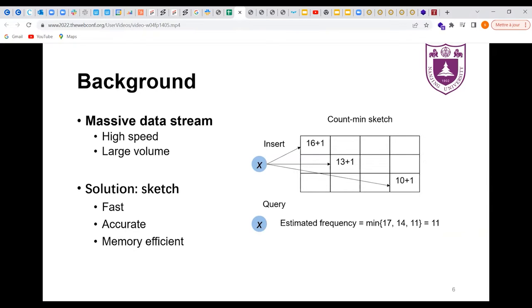It consists of d arrays, each of which has w counters. To insert an item, it maps x to d counters and increases them by one. For each item, its estimated frequency is the smallest value of all the d mapped counters.